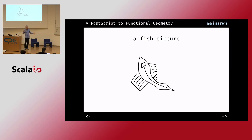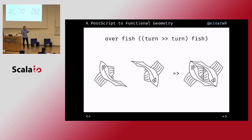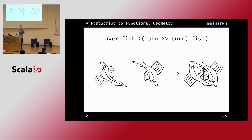What we want to create is this artwork by Escher, so we need a fish picture as well. I can compose fish pictures using more combinators. 'Over' is a kind of weird one that takes two pictures and draws both of them inside the same box — it overlays them. That mostly doesn't work well because everything gets cluttered.